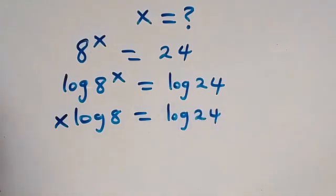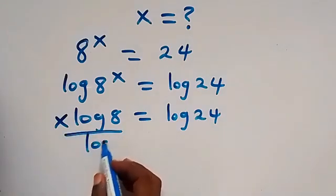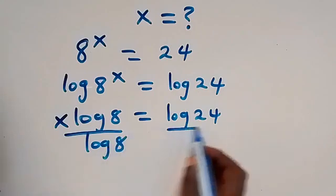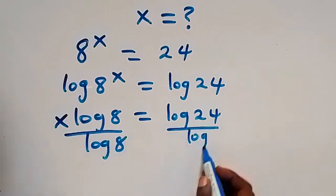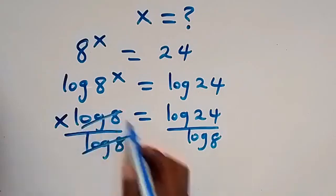Then divide both sides by log 8. We have this side divided by log 8 and also here divided by log 8, such that log 8 cancels log 8.